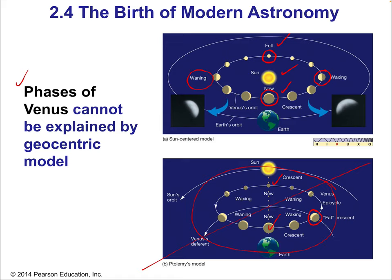The model of epicircles with Earth at the center of the solar system was called the Ptolemaic model, or Ptolemy's model, named after a scientist and philosopher from about 2,000 years ago named Ptolemy. Now we get to Kepler. Kepler was essentially a contemporary of Galileo, living from 1571 to 1630.